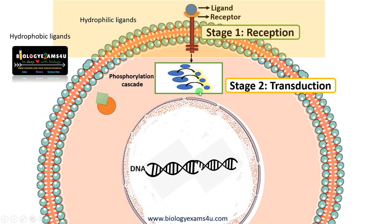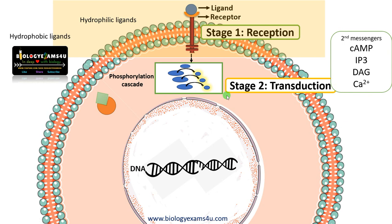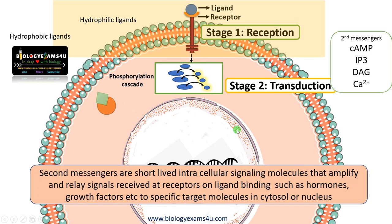Then this signal is transferred and transmitted further with the help of other intermediate molecules, which are called second messengers, like cAMP, inositol triphosphate, diacylglycerol, calcium ions, etc., and transmits the signal to the target molecule. Second messengers are short-lived intracellular molecules that amplify and relay signals received at the receptor upon ligand binding, such as hormones, to specific target molecules either in the cytosol or inside the nucleus.